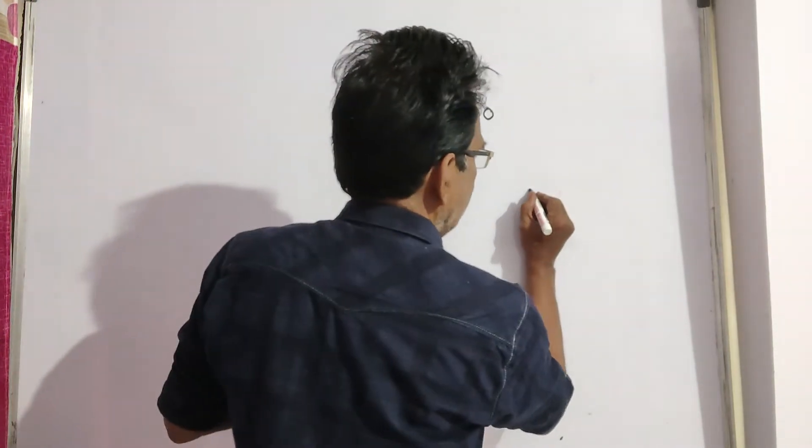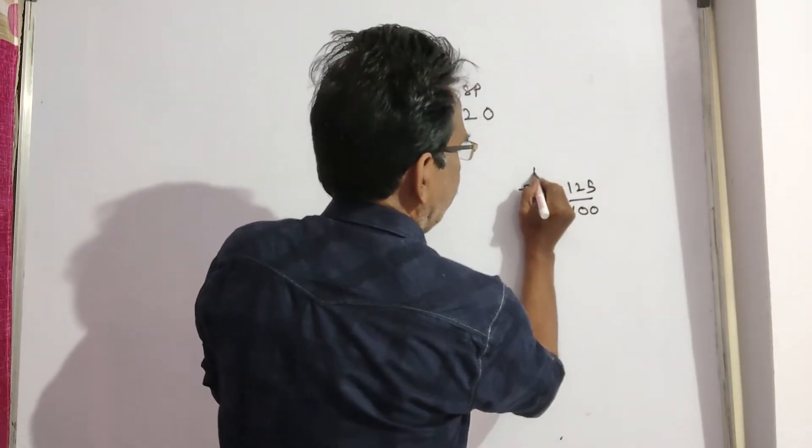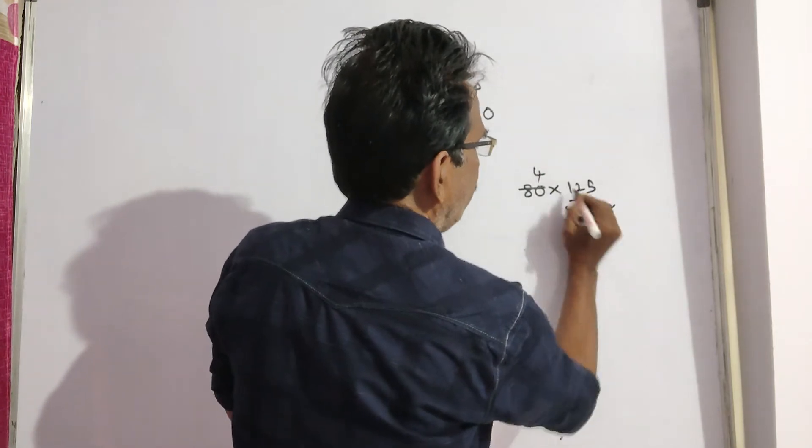So 25 percent on 80 rupees, then the sold price will be 80 into 125 by 100, which is 25 by 1, that is 100. So this 100 is the second sold price.